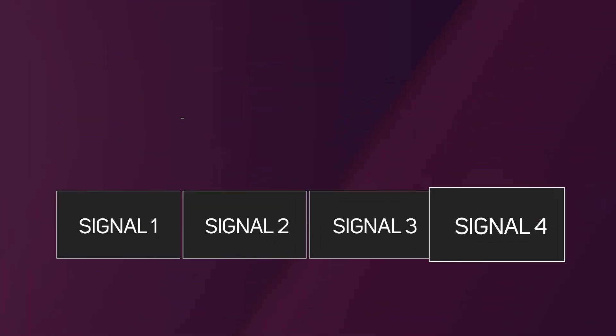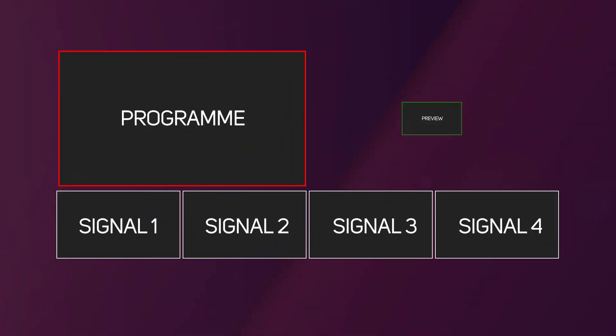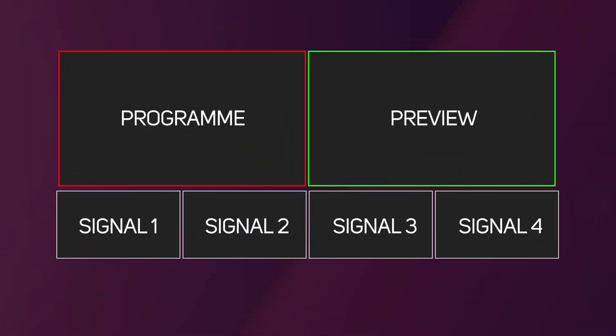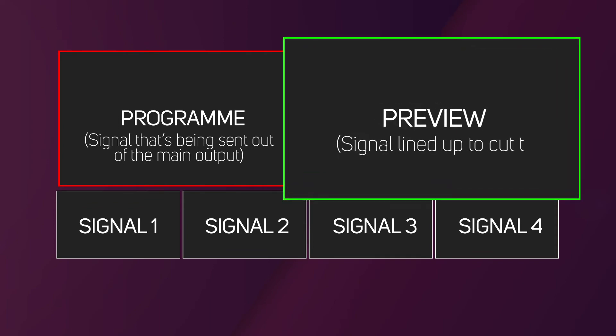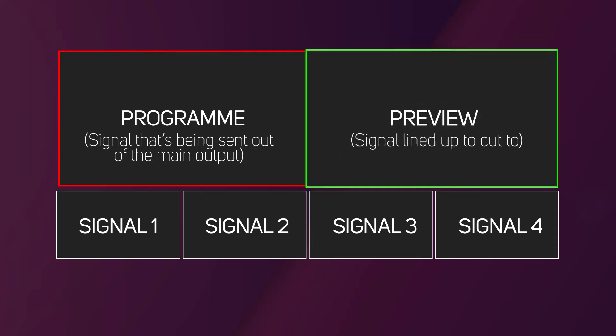Multi viewers allow you to see each incoming signal as well as your program and preview signals, allowing you to make a quick decision on what you want to show. The program view is the signal that's currently being sent out of the main output on the unit, whilst the preview is the signal that you've lined up to cut to.